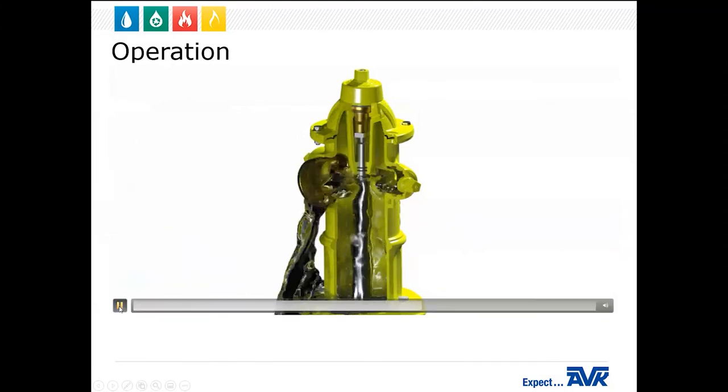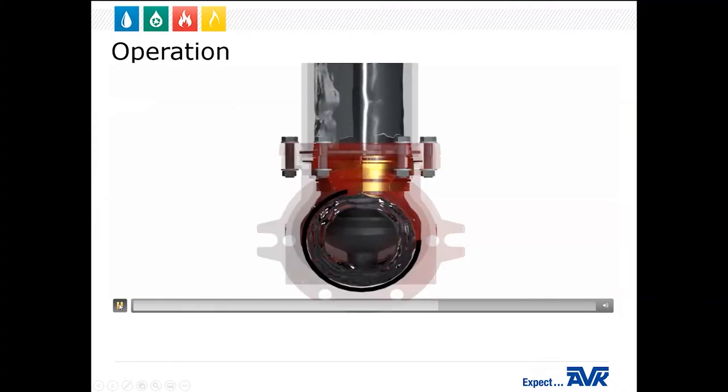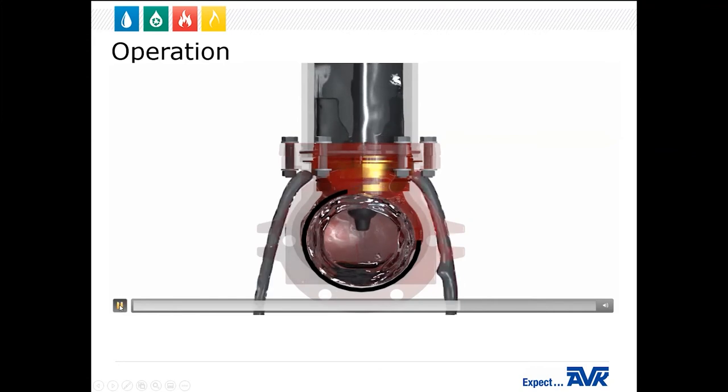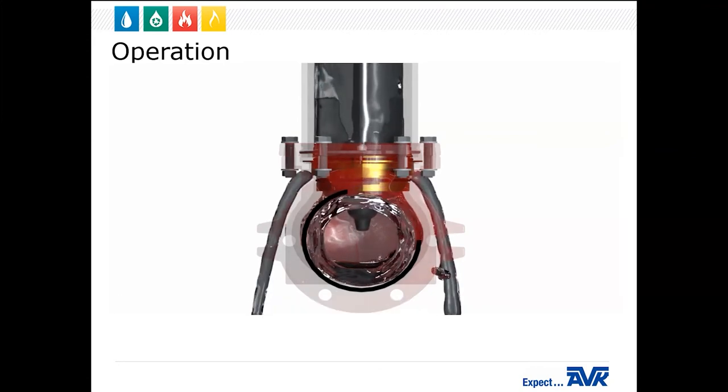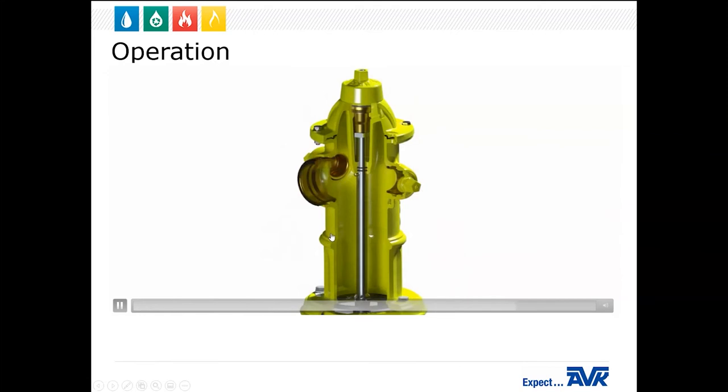Now the exact opposite happens when you close it. As you saw there, you start to pull the stem back up into the op nut and it shuts off the water. Then we go back down and as that closes, you'll see that it'll start to drain. So now it's draining all the water out of that whole barrel. And then the water shuts off. That's how simple it is to operate a hydrant.